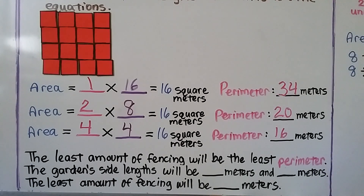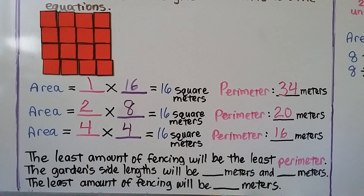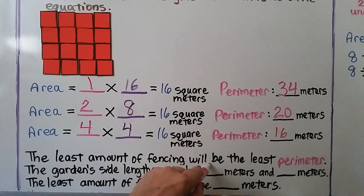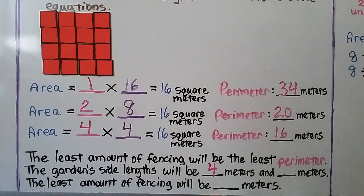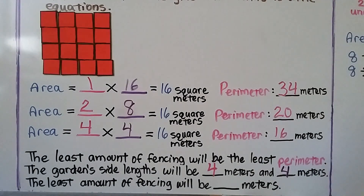We're trying to find the least amount of fencing Mr. Lee can use around his rectangular vegetable garden. The least amount of fencing means the least perimeter, which is the 4×4 rectangle. The garden side lengths will be 4 meters for the length and 4 meters for the width, and the least amount of fencing will be 16 meters.